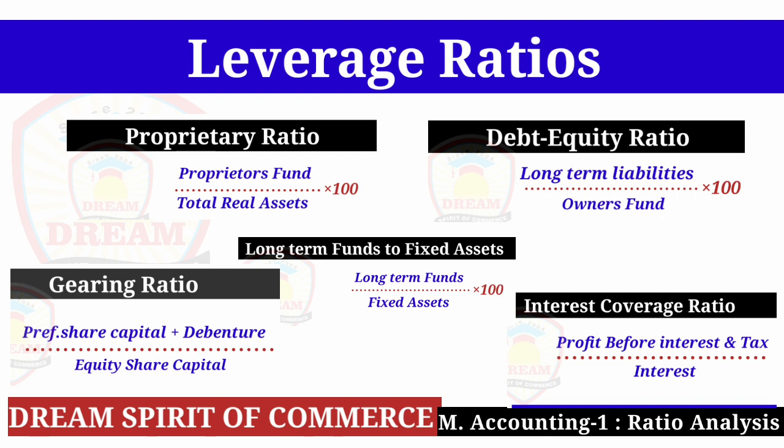Friends, in the leverage ratio category there are 5 ratios. Ratio 1: Proprietary Ratio — Proprietors Fund divided by Total Real Assets multiplied by 100. Second: Debt Equity Ratio — Long Term Liabilities divided by Owners Fund multiplied by 100. Third: Gearing Ratio — Preference Share Capital plus Debenture divided by Equity Share Capital. Fourth: Long Term Fund to Fixed Assets — Long Term Fund divided by Fixed Assets multiplied by 100. Fifth: Interest Coverage Ratio — PBIT divided by Interest.